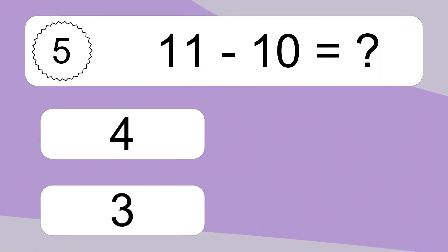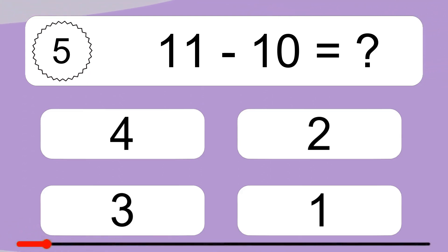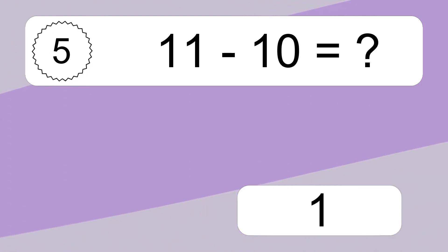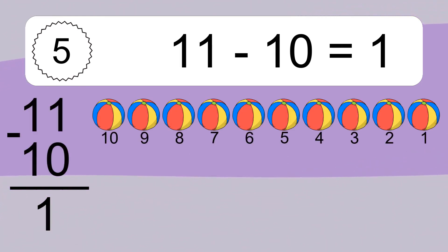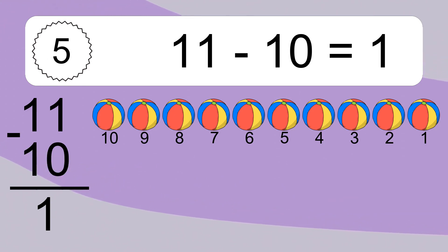11 minus 10 equals what? 11 minus 10 equals 1. Let's count it: 10, 9, 8, 7, 6, 5, 4, 3, 2, 1.